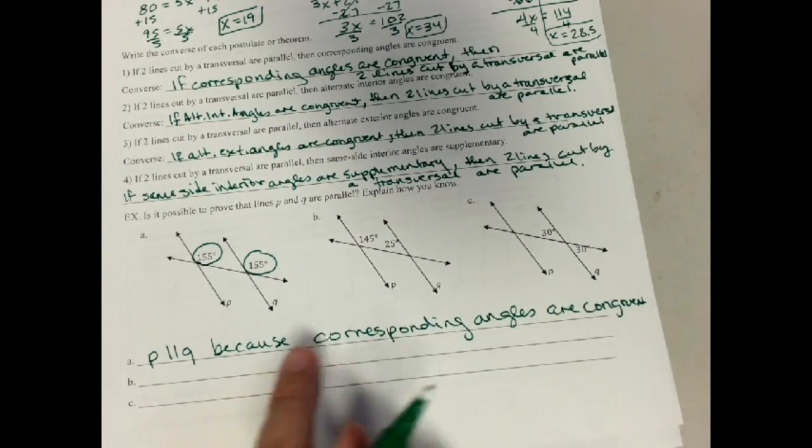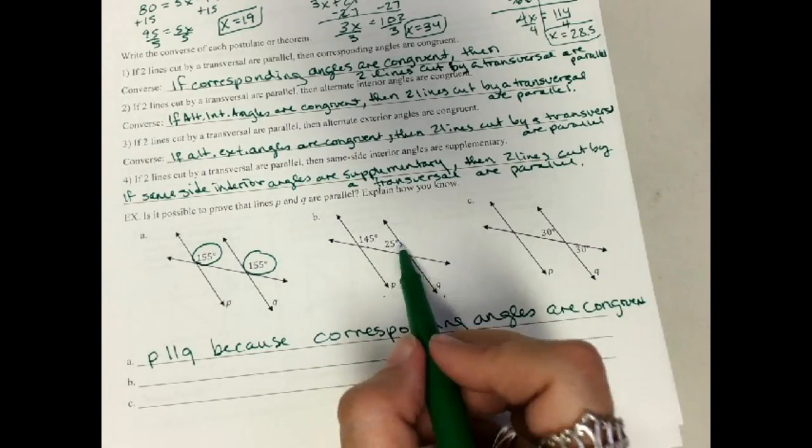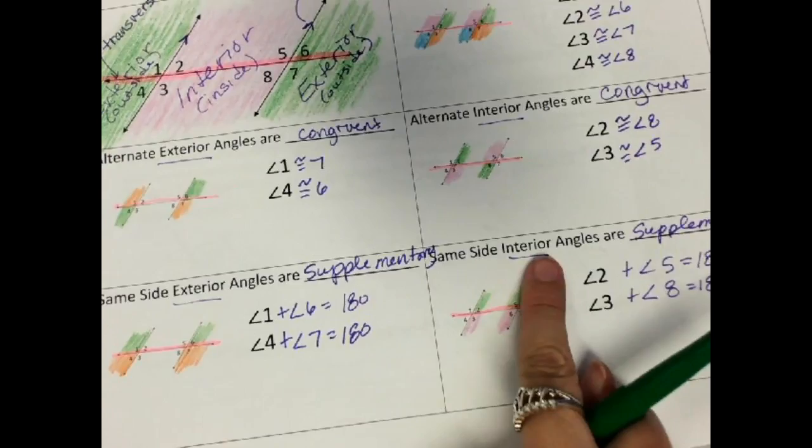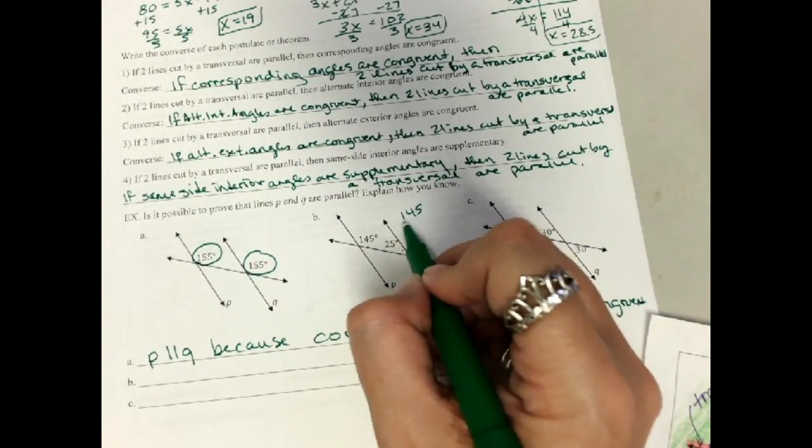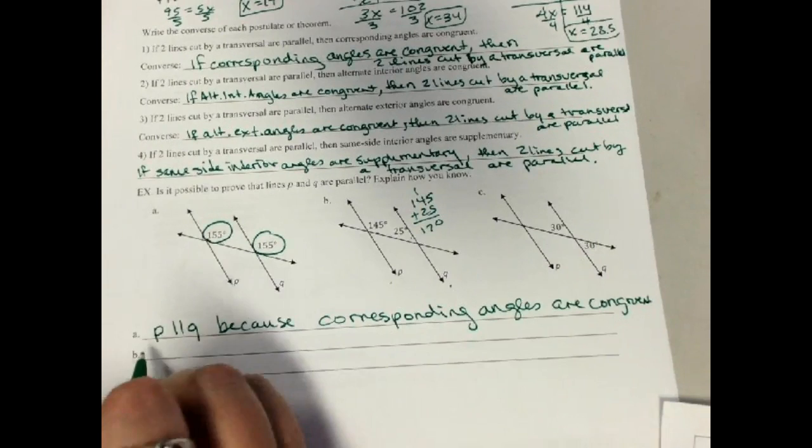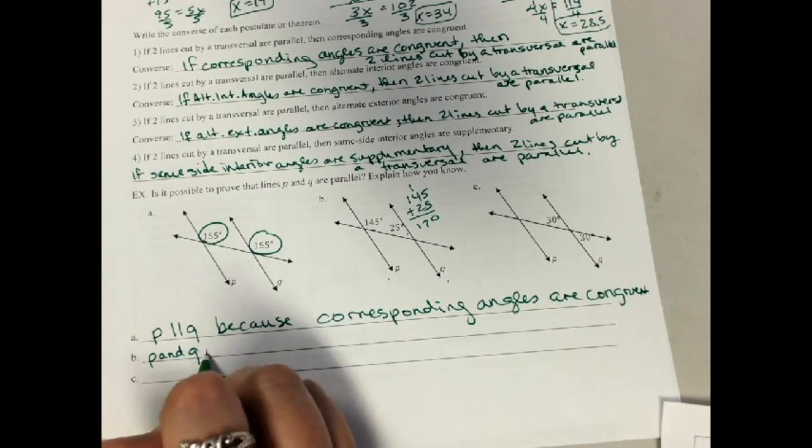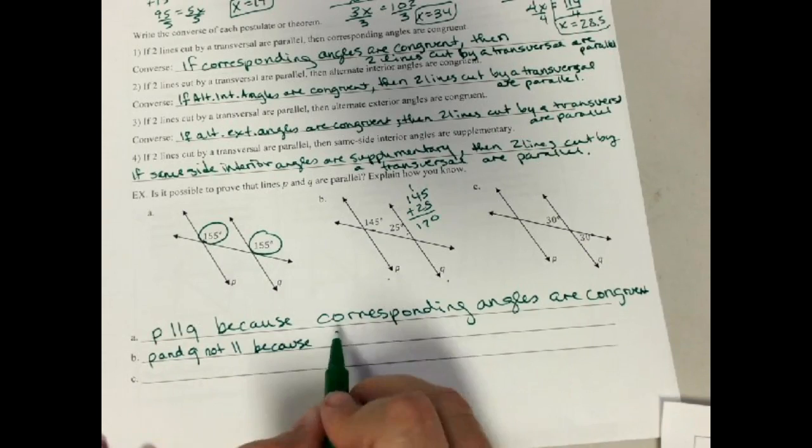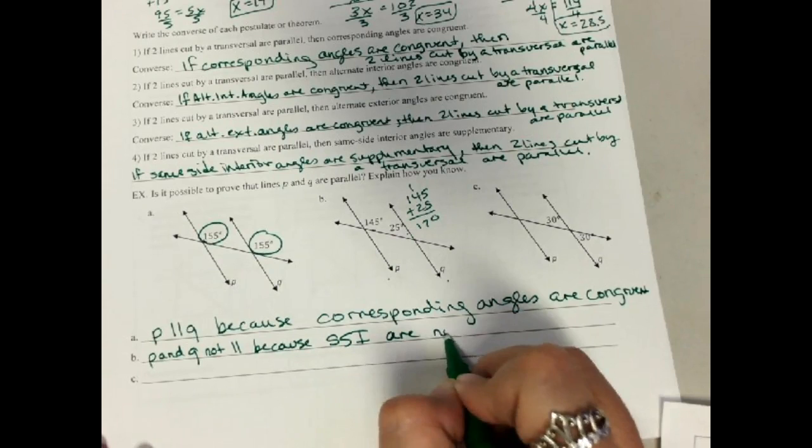P is parallel to Q because corresponding angles are congruent. We just did what it asked. What about the next one? P and Q, these are same side interior, and they should, same side interior should be supplementary. Do these add up to 180? Let's check. Uh-oh, those only add up to 170. So these two are not supplementary, so those are not parallel. So P and Q are not parallel because, I'm going to abbreviate it, same side interior are not supplementary.